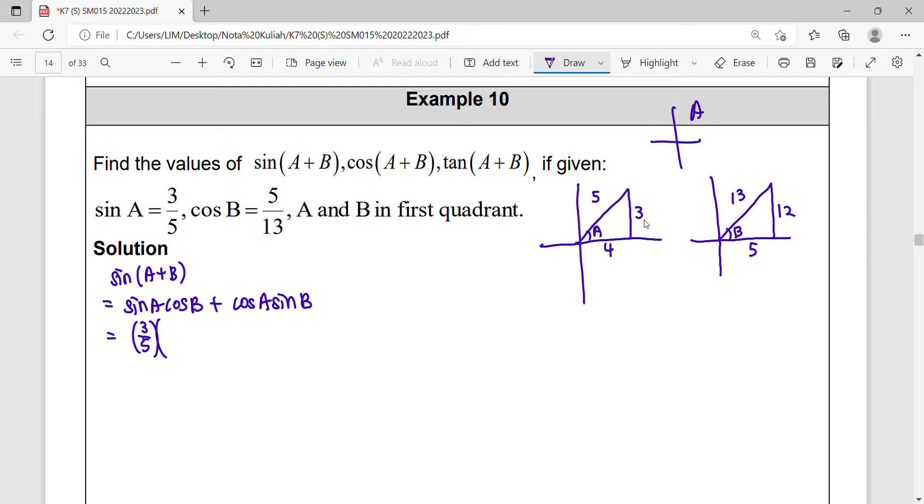Cosine B 5 over 13. Alright, positive value in first quadrant. Meanwhile cos A, it will be 4 over 5, sine B opposite hypotenuse 12 over 13. So simplify this ratio, we give you 63 over 65.